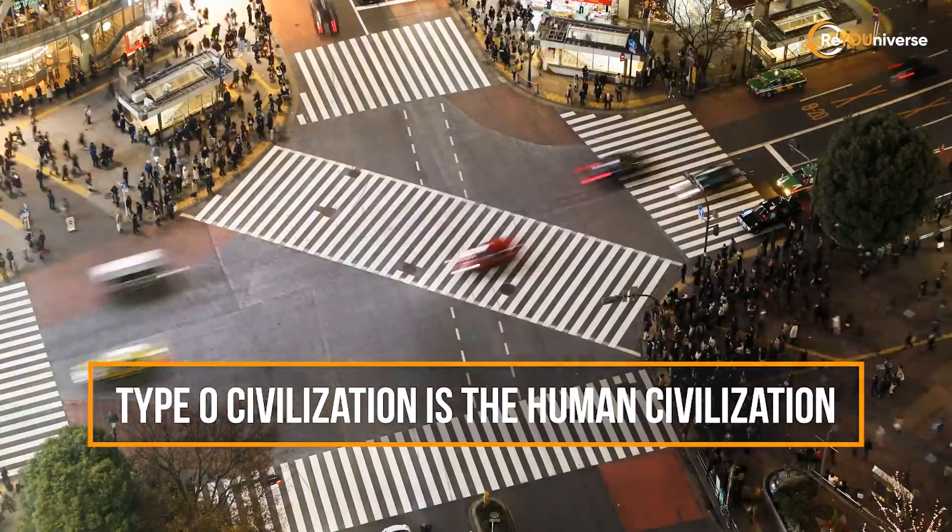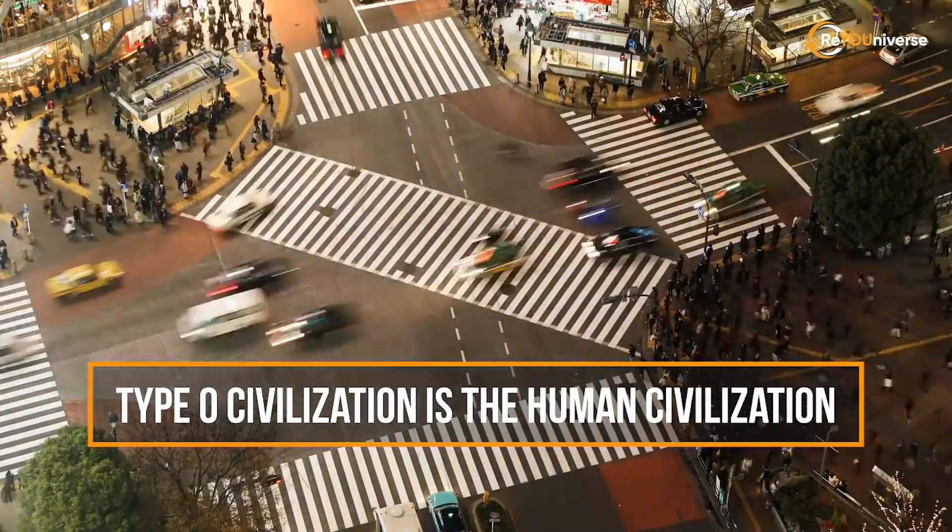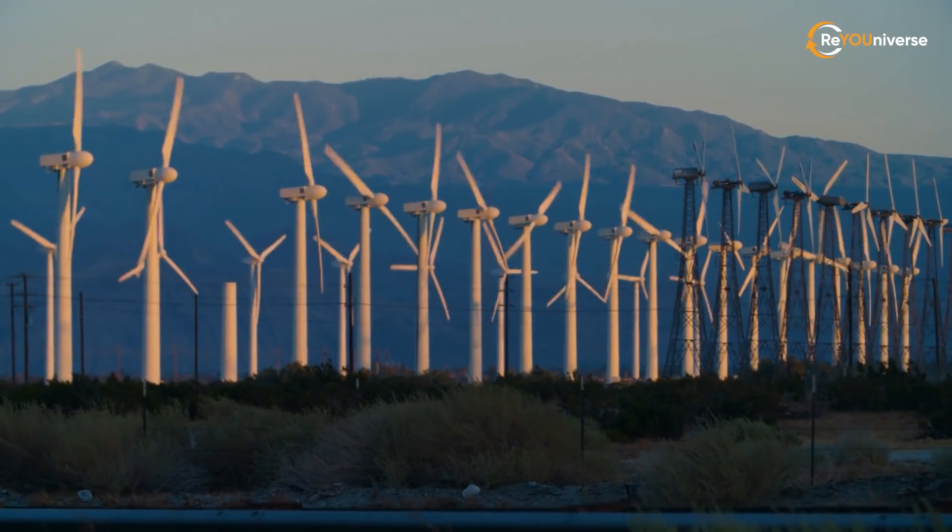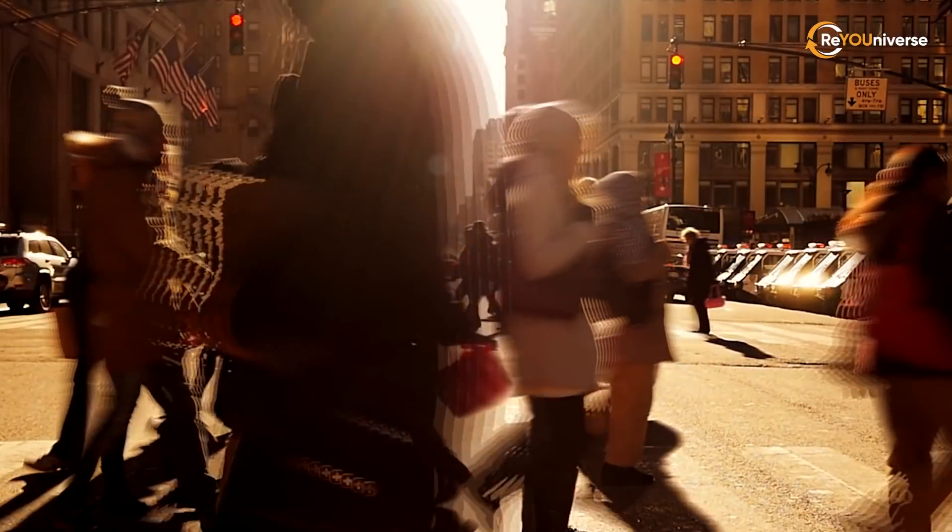Type 0 civilization is the human civilization. Level 0 is where we are at. At this level, not all the planet's energy is used. But why hasn't our human civilization reached even the first level?